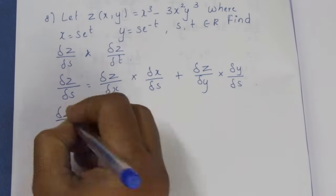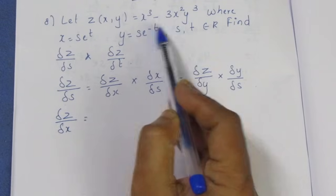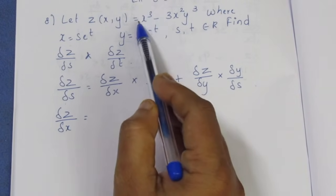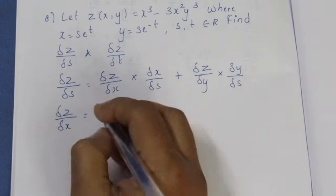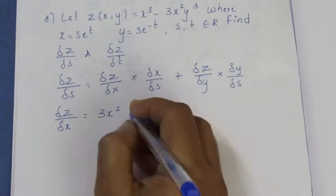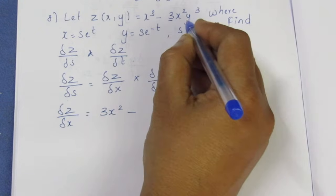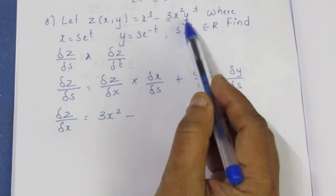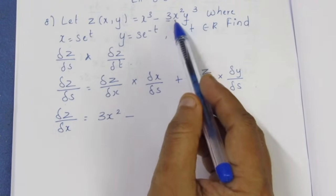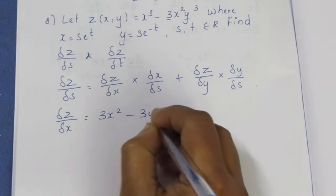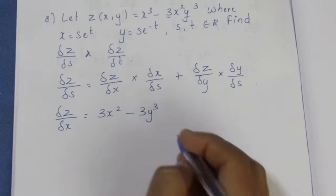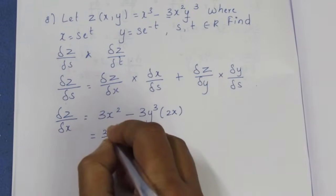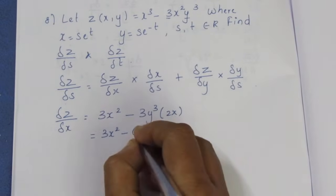We find ∂z/∂x by differentiating z = x³ - 3x²y³ with respect to x. The x³ term gives 3x², and differentiating 3x² gives 2x, so we get 3x² - 6xy³.